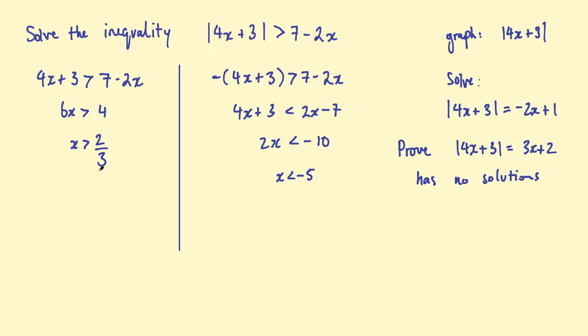So, here we have our solutions for x. And if we were to use set notation, I believe it looks like this. So, x is less than negative 5 or x is greater than 2 thirds. So, they're the possible solutions.